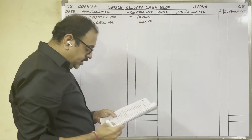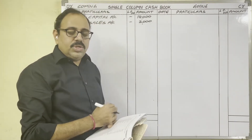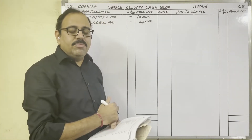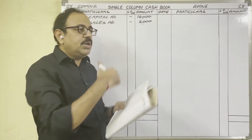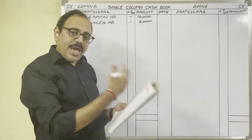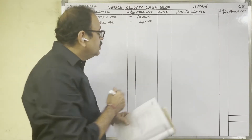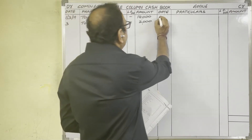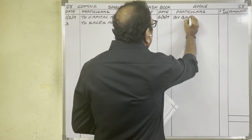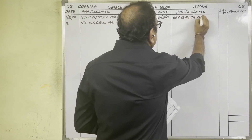6th day: cash paid into bank 5,000 rupees. We are depositing cash into the bank, so from the firm cash is going out — credit side. Write: 6th date, By Bank account, 5,000 rupees.